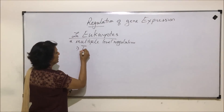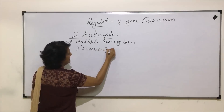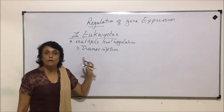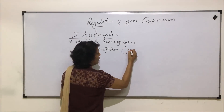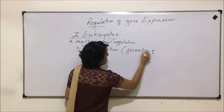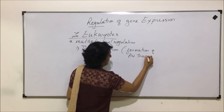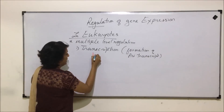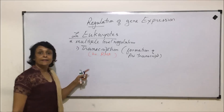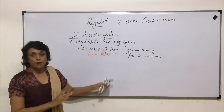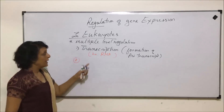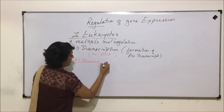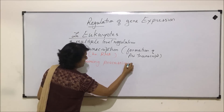The first level is transcription. We have seen the process of transcription, and here transcription means formation of hnRNA first — that is, formation of the primary transcript. So when hnRNA is being synthesized, at that time this regulation can be controlled.